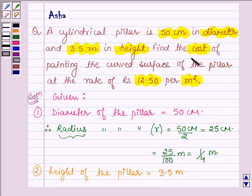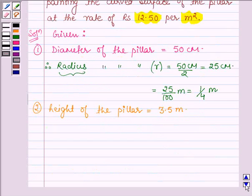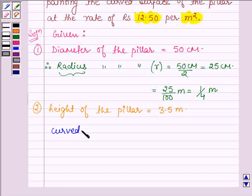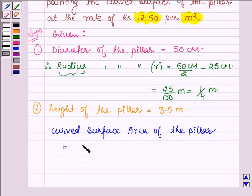Now we need to find the cost of painting the curved surface at the rate of Rs. 12.50 per m². First, let's find the curved surface area of the pillar. This equals 2πrh, where r is the radius and h is the height of the pillar.